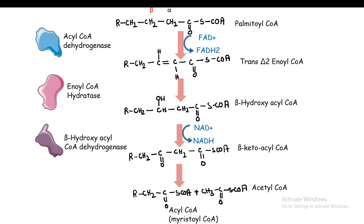Beta-hydroxyacyl CoA is further converted to beta-ketoacyl CoA by beta-hydroxyacyl CoA dehydrogenase, and ultimately thiolase releases one molecule of acetyl CoA, forming a shorter acyl CoA. After one cycle, palmitoyl CoA becomes myristoyl CoA (14 carbons). This cycle repeats, and 16-carbon palmitoyl CoA ultimately generates eight molecules of acetyl CoA, which can enter the Krebs cycle or be used for ketone body generation.